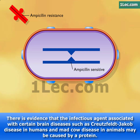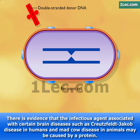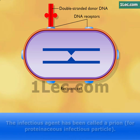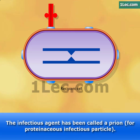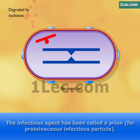DNA transformation involves the transfer of naked DNA into a recipient cell. In the first step, double-stranded donor DNA binds to specific receptors on the surface of a competent cell. One strand of the donor DNA is degraded by nucleases while the other strand enters the cell.